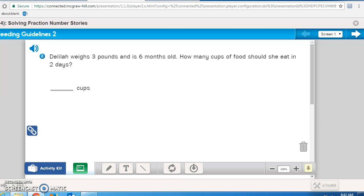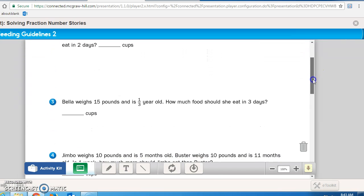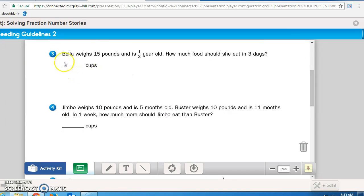So 307 now reads: Delilah weighs 3 pounds and is 6 months old. How many cups of food should she eat in 2 days? You're going to need to go to page 306 to look at the pounds and the age and the recommendation of cups of food for Delilah. Stop the recording now and do number 2.